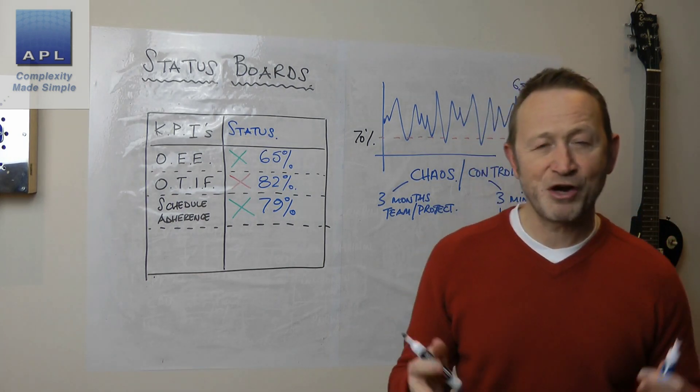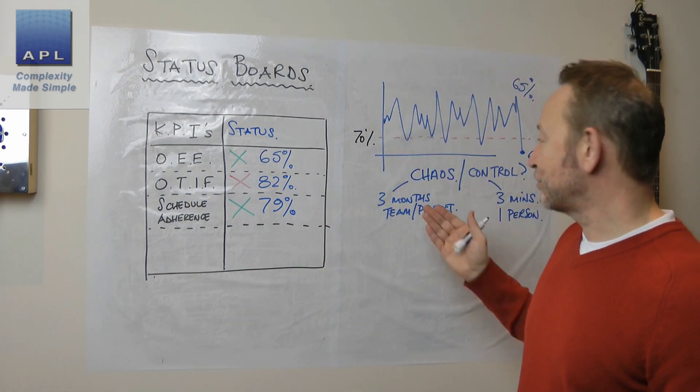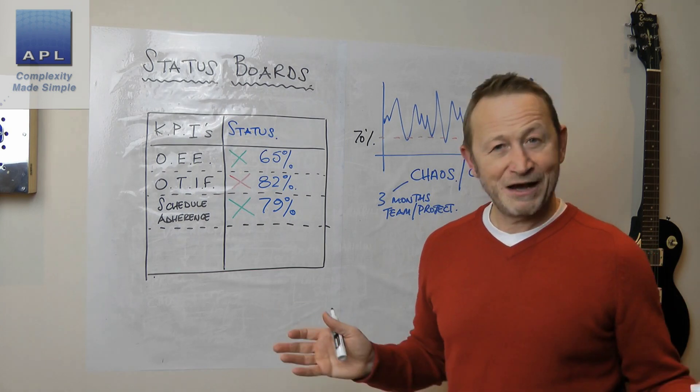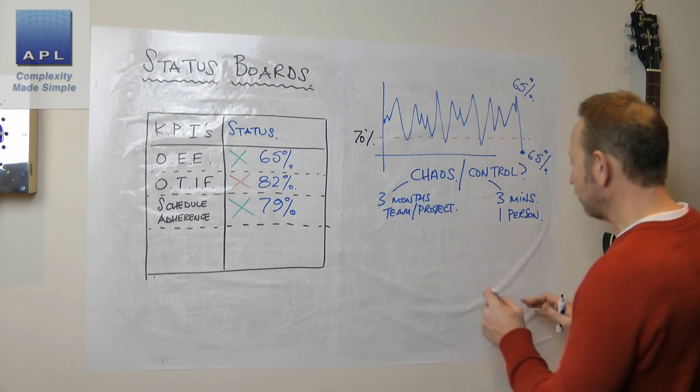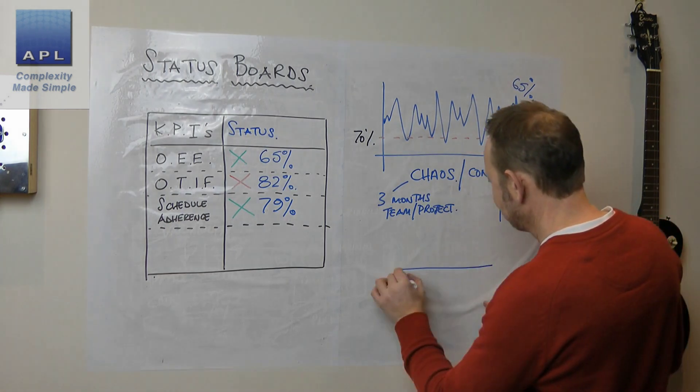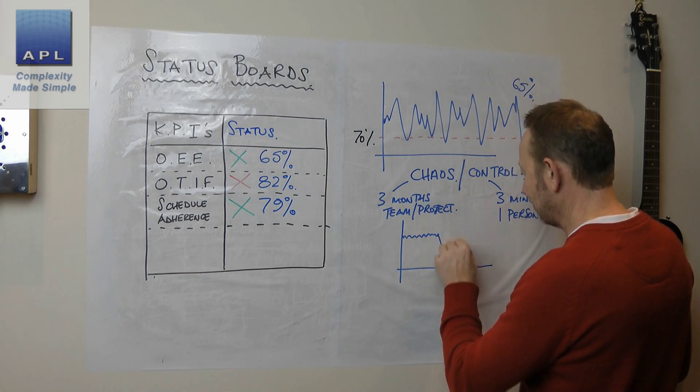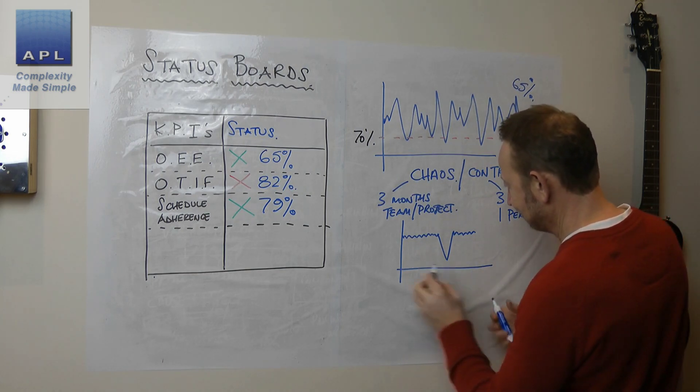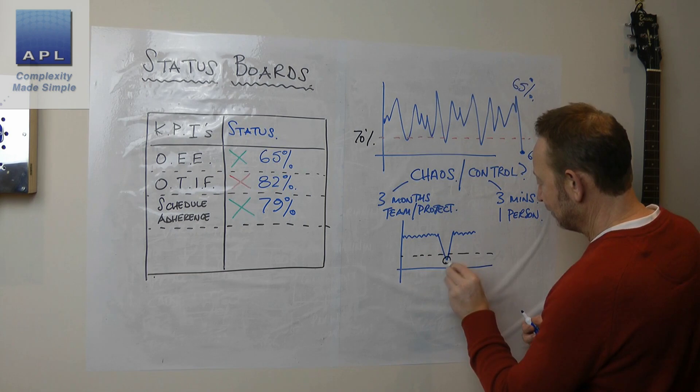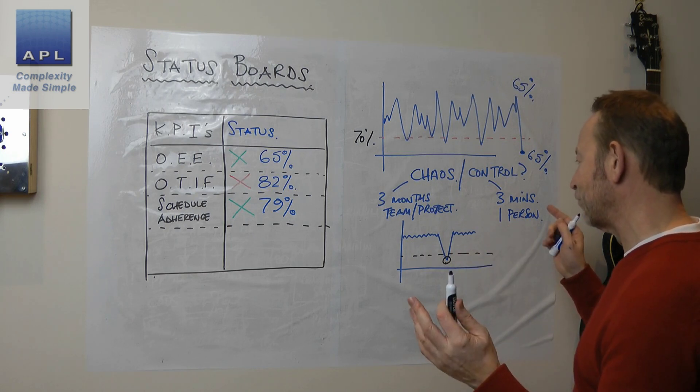Now that graph, for instance, is showing me that the process is in chaos. This is going to take three months to fix and I need a team. How can I make that judgment? I'm looking at the graph. What does control look like on the other hand? Well, control would look like this. Everything was going great. And then suddenly the process did that. So here's the limit. This is a single event.